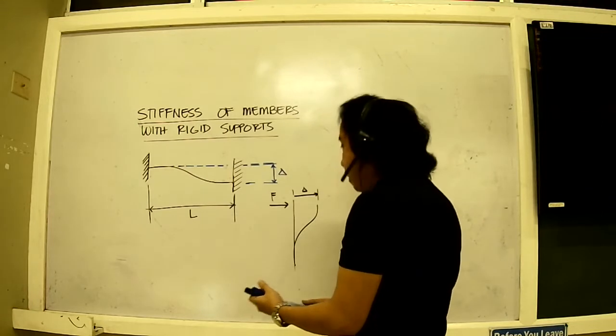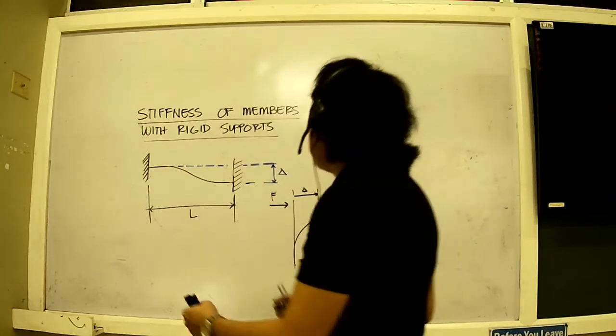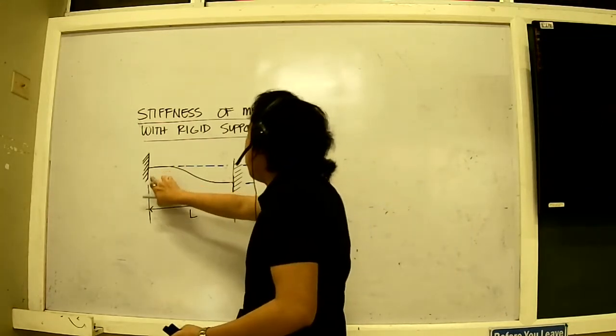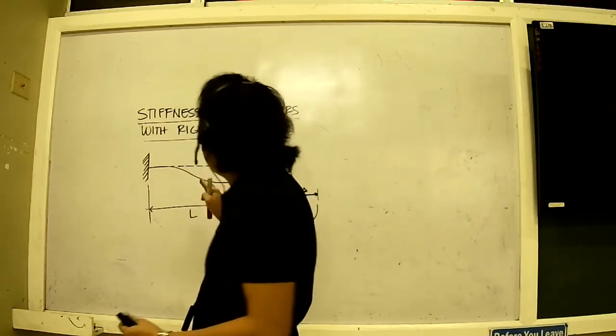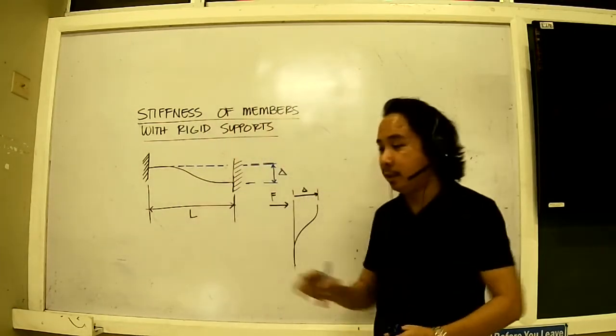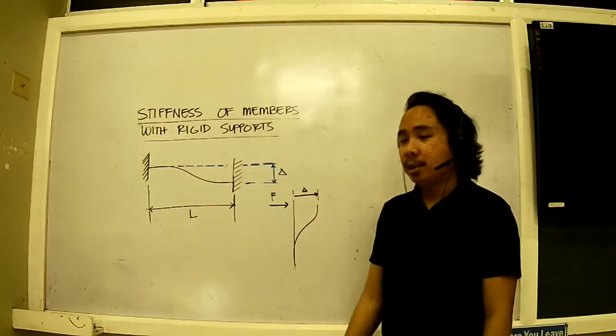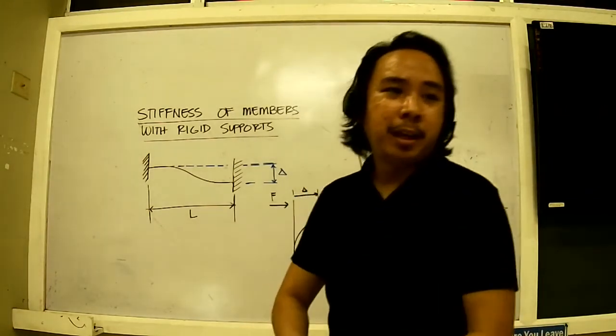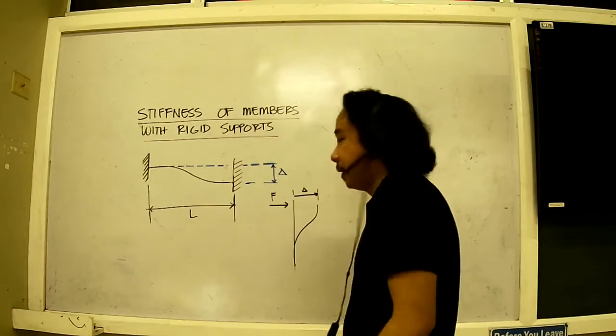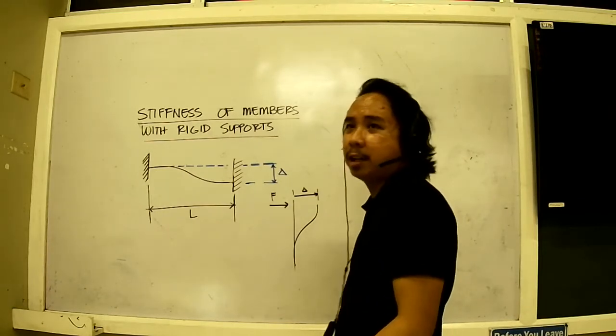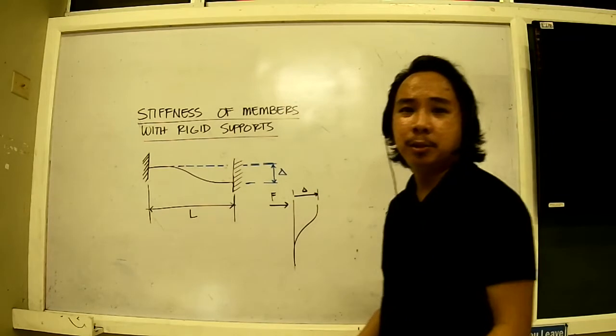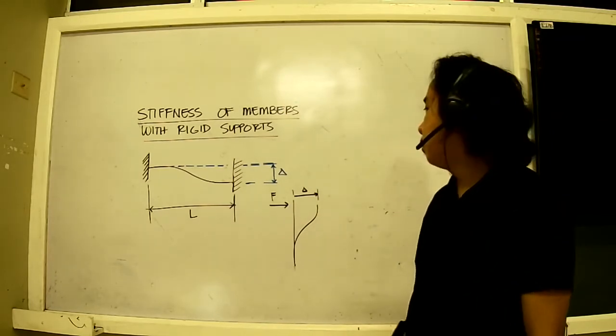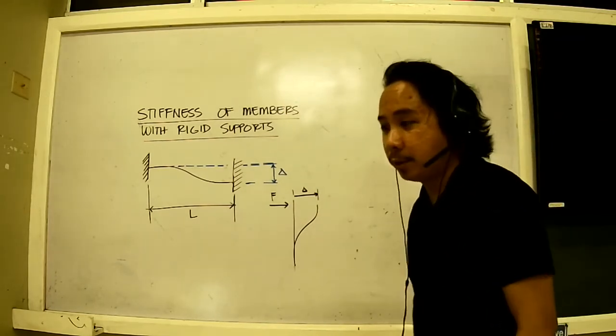Now as you can see, this member here, this was supposed to be straight, but somehow deformation is forced upon it. Now this is not very uncommon because during construction, there is what we call fabrication errors.